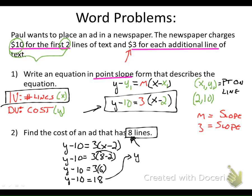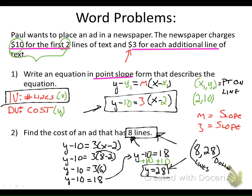I just got to use inverse operations to solve for Y, and I get that Y is 28. Keep in mind what this means - that means if I want to take out an eight-line ad, it's going to cost $28. In other words, the ordered pair (8, 28) would be a point on this line if we were to graph it. We always need to be keeping in mind what these numbers actually mean in this situation.